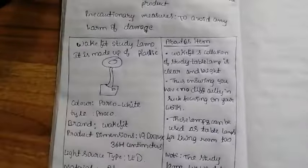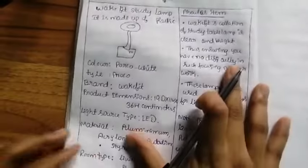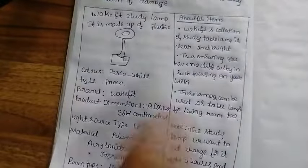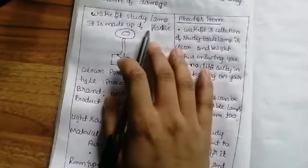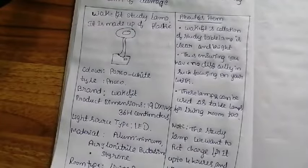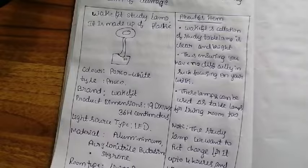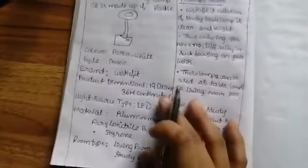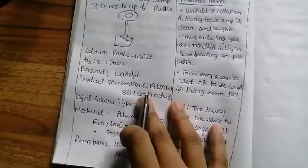Let us see how to write it. Divide it into two boxes with subdivisions. Write the product manual - first write the product name: 'Study Lamp'. Next, mention it is made up of plastic. The lamp is in plastic form. Next is features.